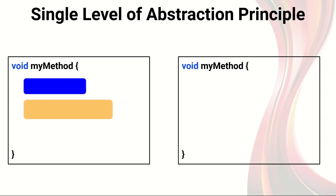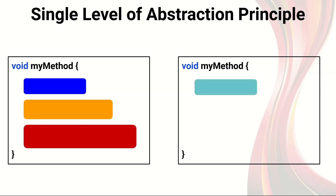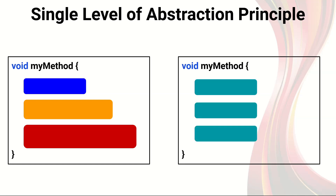The idea behind the Single Level of Abstraction Principle is that all code inside a method should be at the same level of abstraction. This way, it is easier to read and understand the code. If code is expressed with different levels of abstraction within the same method, this could result in confusion and difficulty understanding. In other words, mixing different levels of abstraction in one method can make it harder to read and understand. We should always try to keep the code inside our methods at the same level of abstraction.